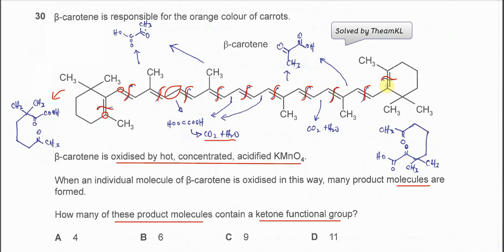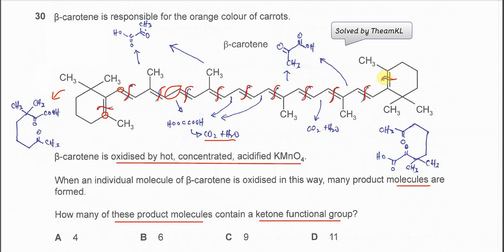The last bond break: when this bond breaks, this part will form a carboxylic acid. And this carbon will form a ketone, and this one will also form another ketone. So basically, this final fragment will form with two ketone groups.